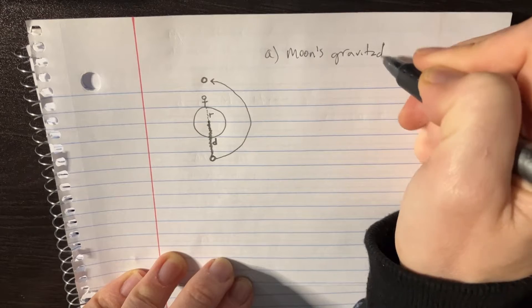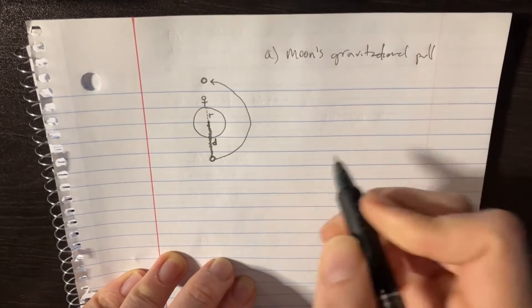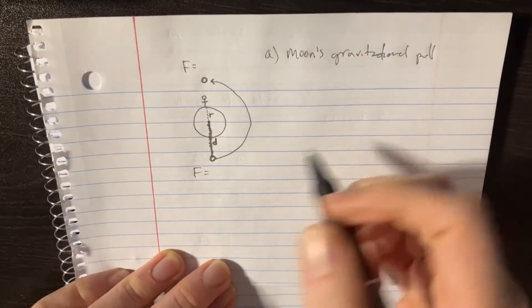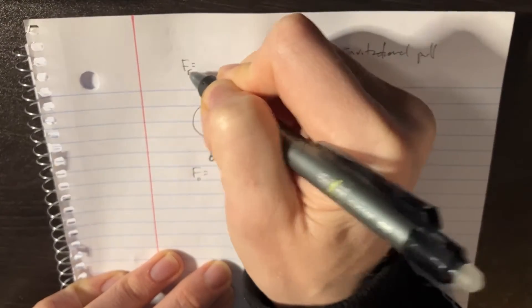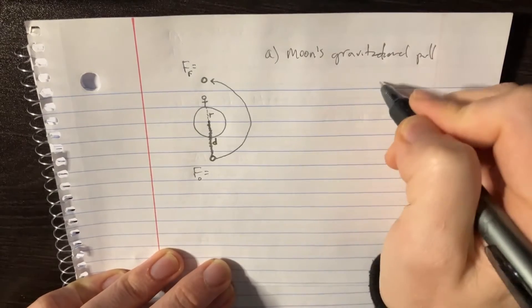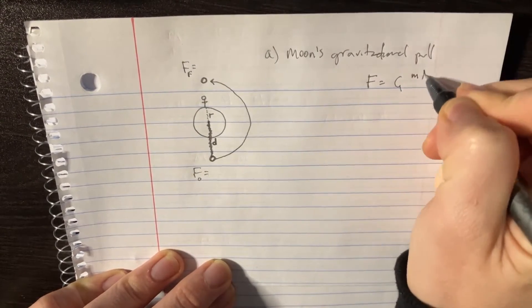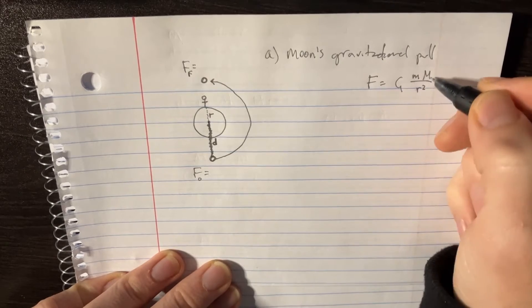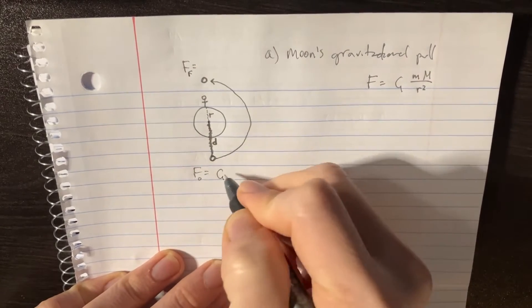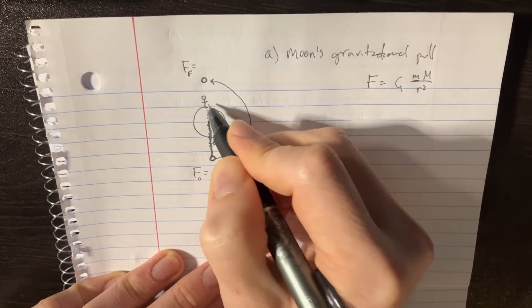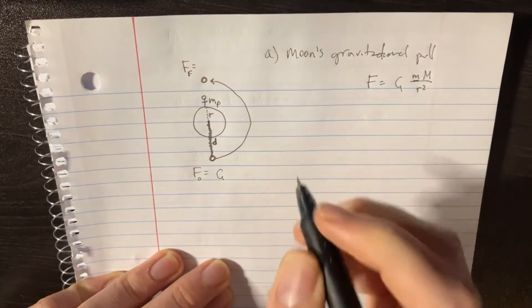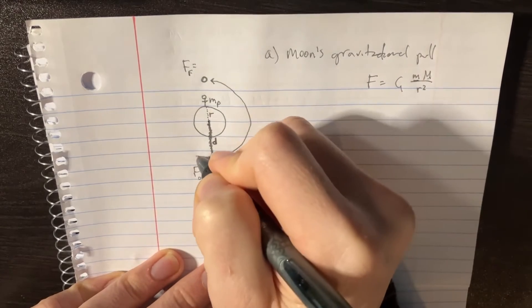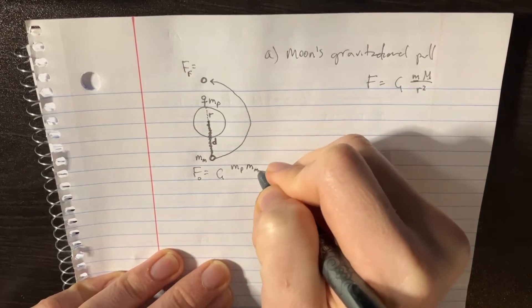We're looking for the moon's gravitational pull, and we can represent that by the force of gravity. We're going to figure out what F is in the initial state and then also the final state. The force as usual is F = G times M times M divided by R squared. G is going to be the same. The first M is going to be us, so we'll call ourselves M_P. The other M is the mass of the moon.